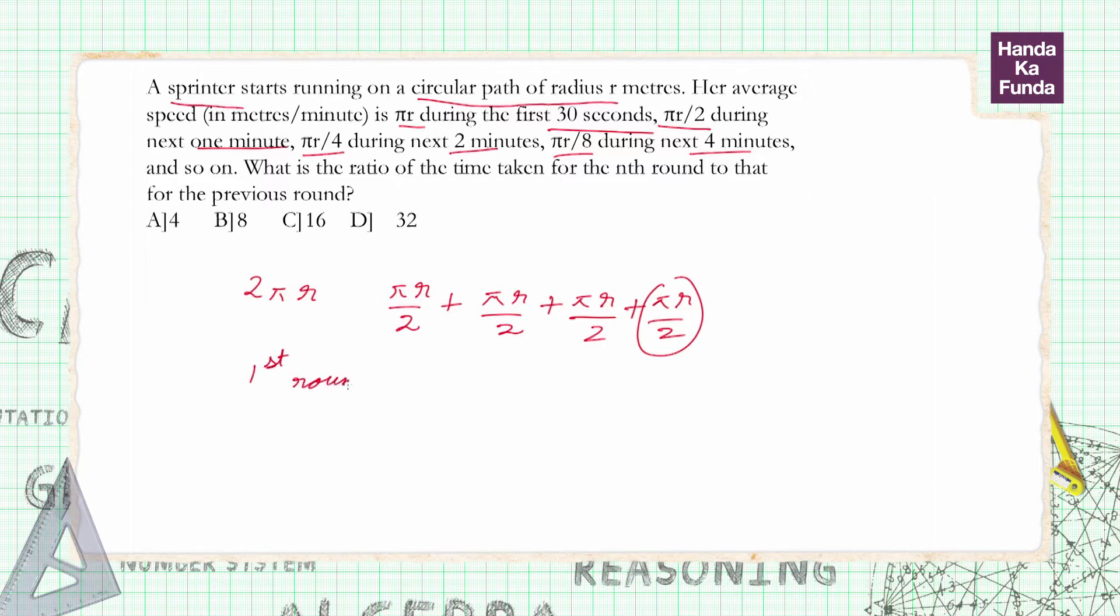For the first part of the journey, half a minute, then second part 1 minute, then 2 minutes, then 4 minutes, and the same pattern will continue. So what will happen in the second round? It will be starting from double of 4, so 8 minutes, then 16.